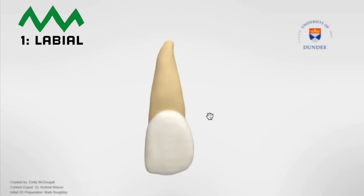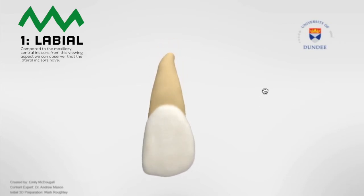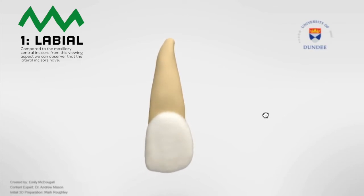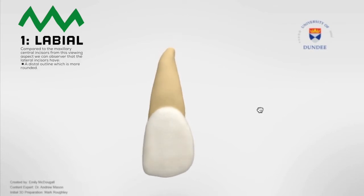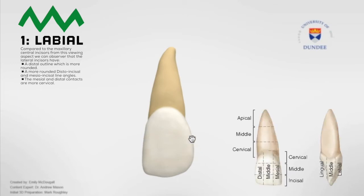Number one is the labial viewing aspect of the tooth. This view considers the surface of the tooth facing the lips. Compared to the maxillary central incisors, from this viewing aspect, we can observe that the lateral incisors have a distal outline which is more rounded, with more rounded distal and mesial incisor line angles. The mesial and distal contacts are more cervical — the point at which they make contact with the neighboring tooth on either side is more cervically placed.